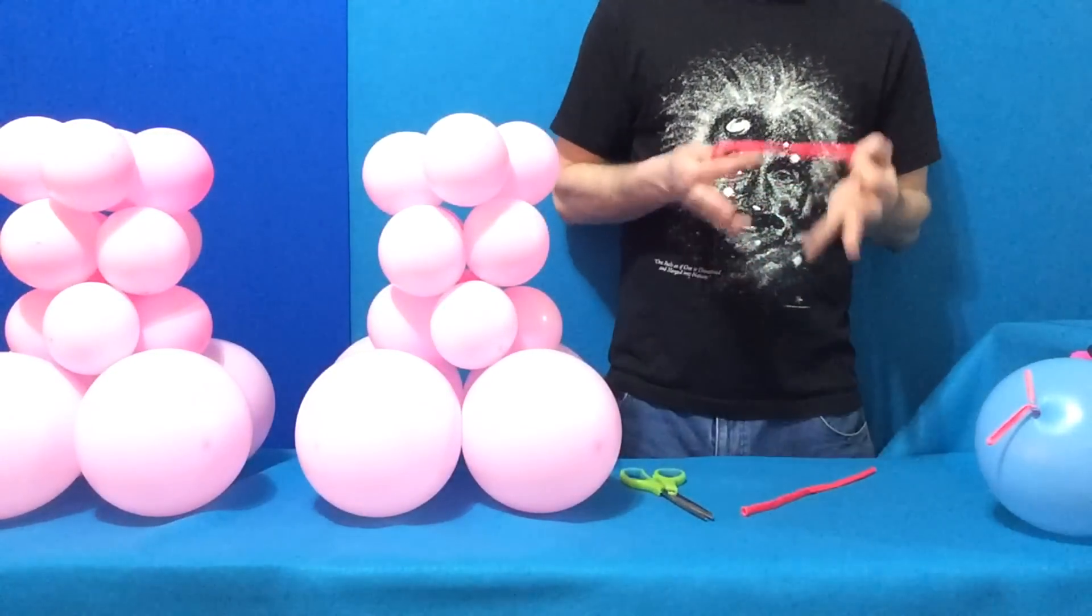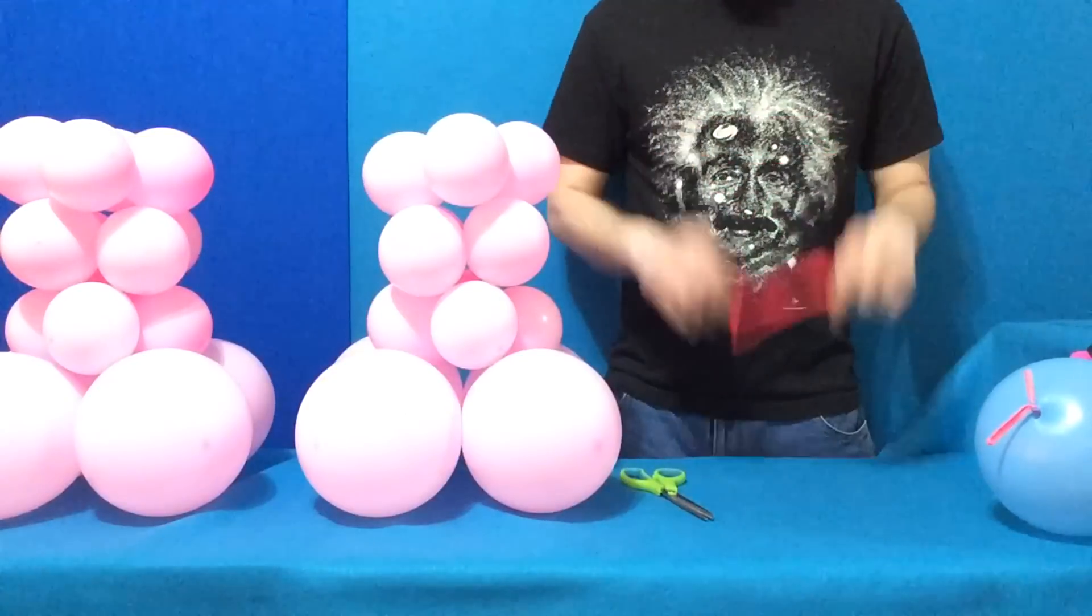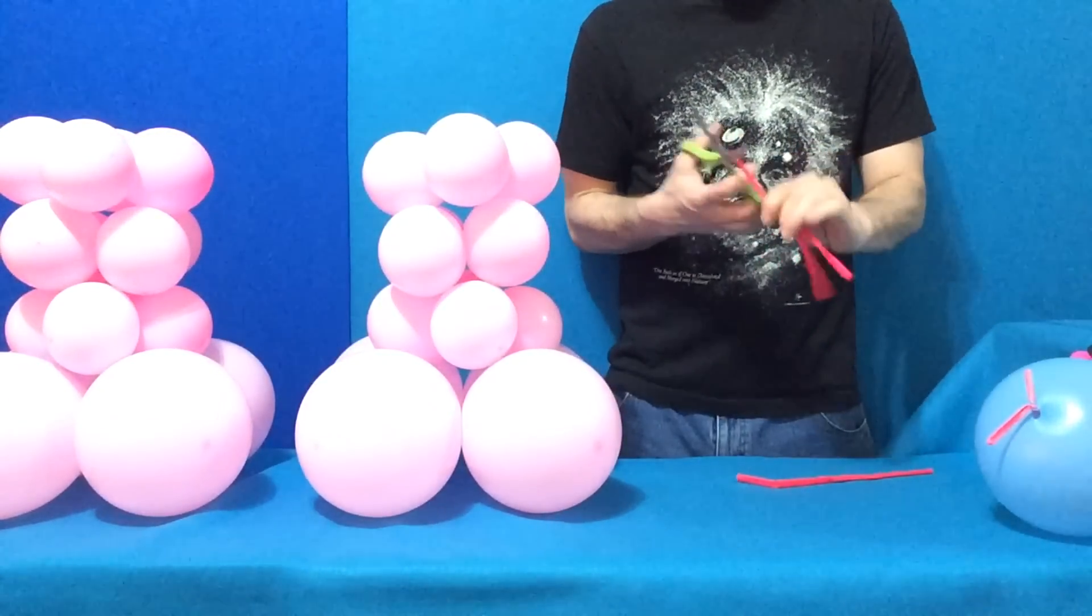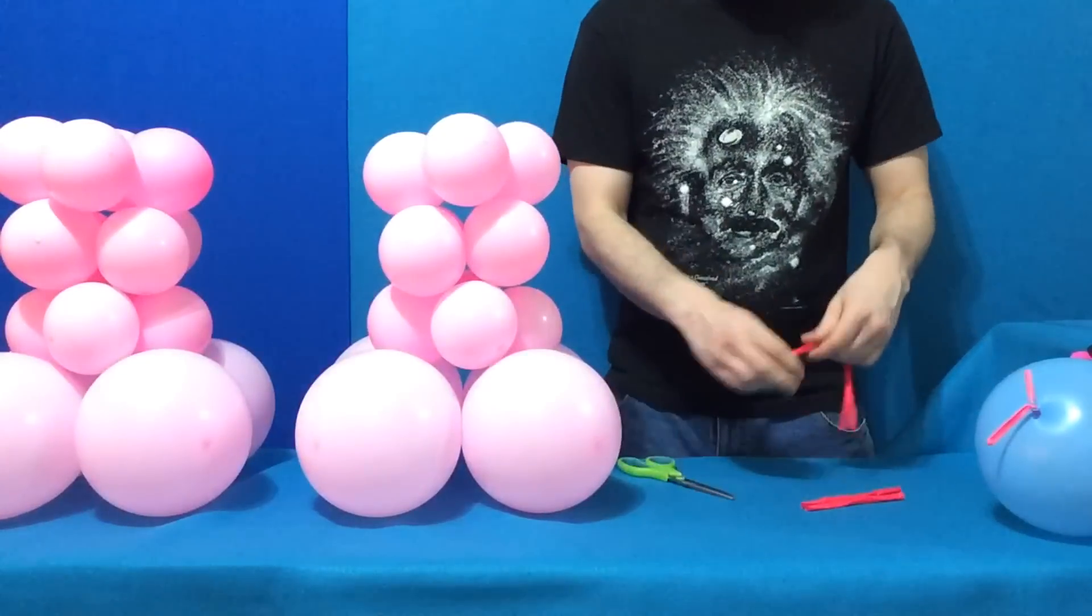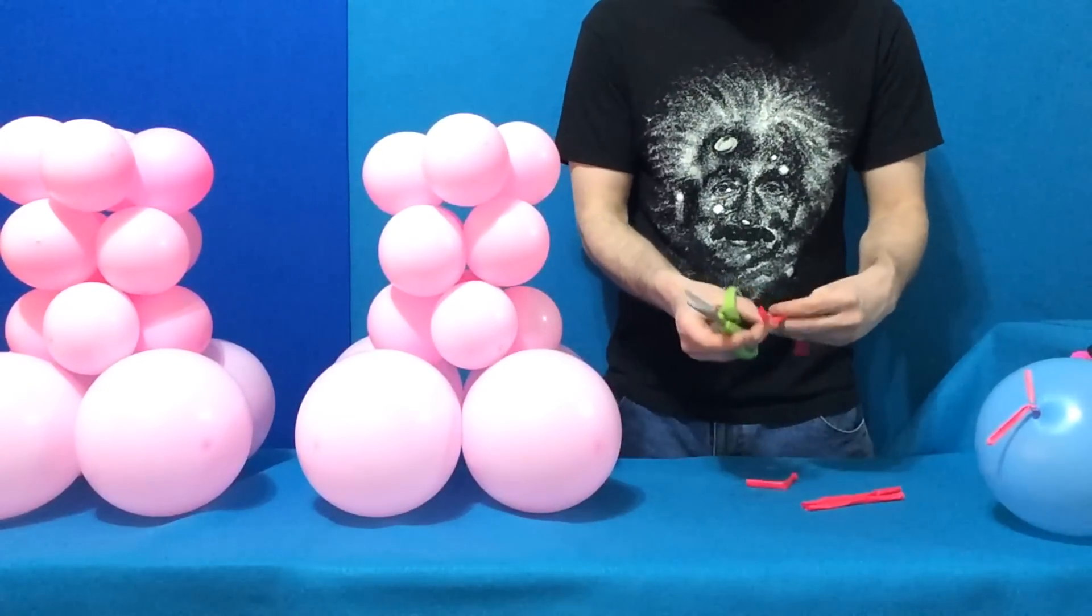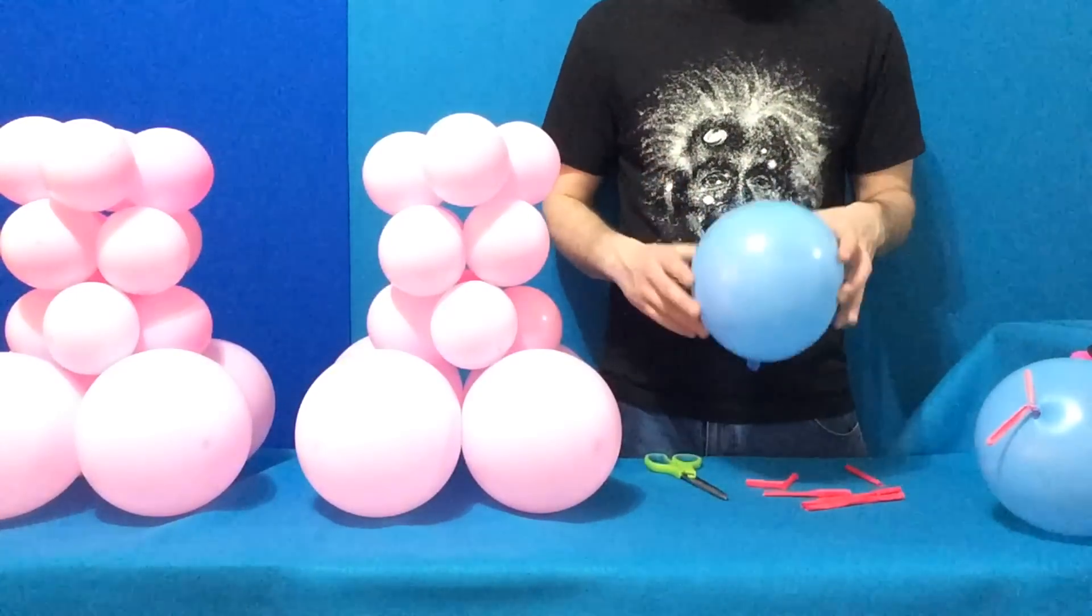Take two of these 260 balloons out of the package, and once again, we're going to cut them into five scraps. I'm just going to cut this one in half, and this one into thirds. It's the easiest way to do things. Now, there's no easy way exactly to describe this.